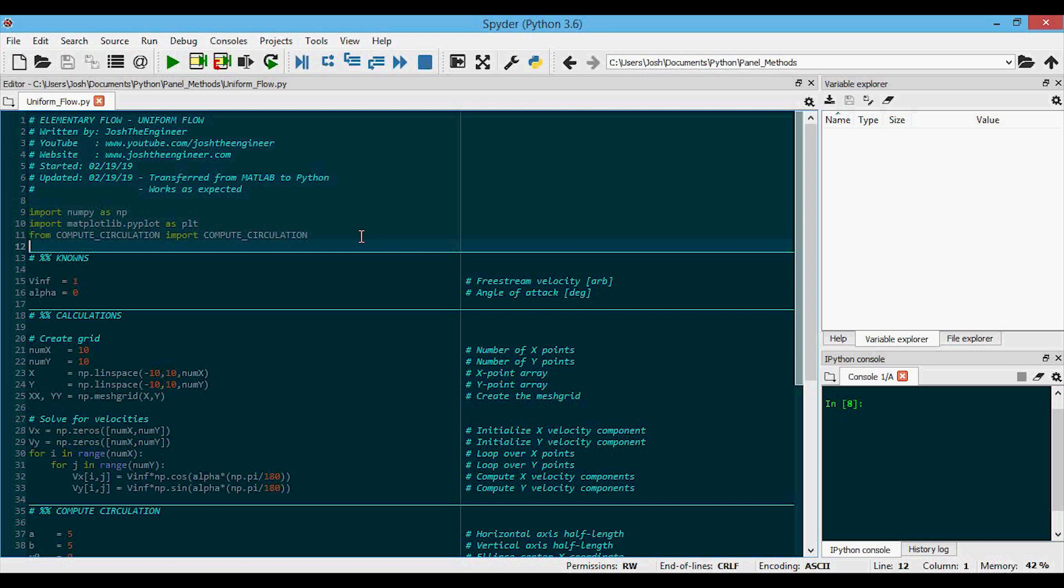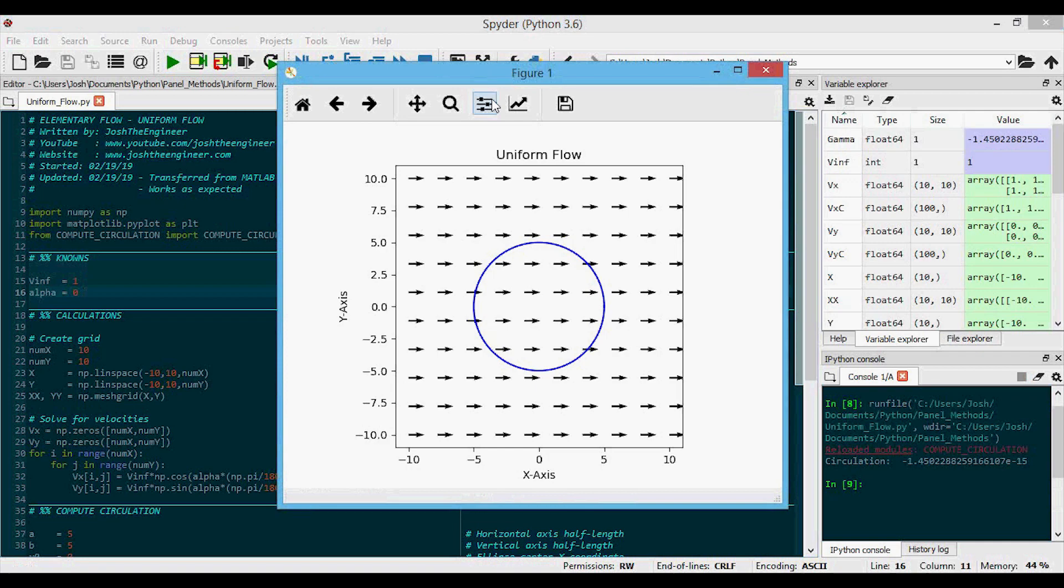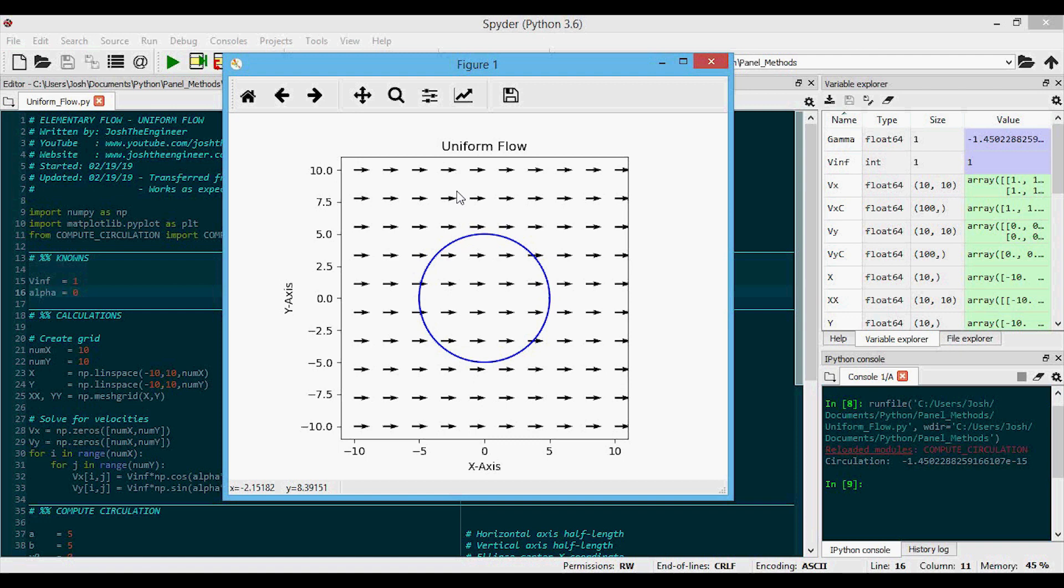Now we can run the program, first with our default angle of attack of zero here, and so we'll press run, and a plot will pop up. And from this plot, we can see that the velocity vectors are shown in black, and that they are all pointing in the positive x direction, as they should be. The computed circulation we can see down here is essentially equal to zero, as we would expect in this particular case.